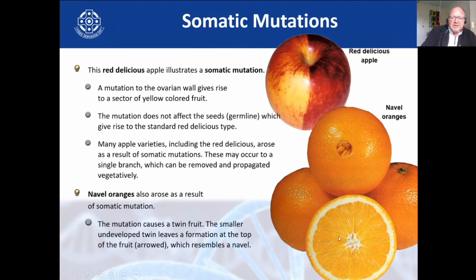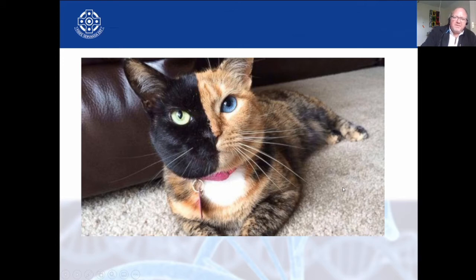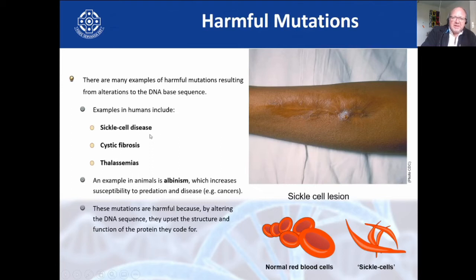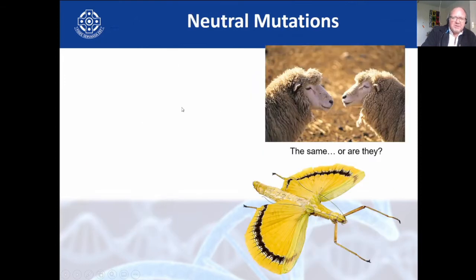Because the navel orange doesn't contain any pips, we know it's a somatic mutation. There is no gamete, no seed, no zygote to go forth and become a new organism. This cat — if you look at the face — again early on during development, one half must have had a mutation. Here are some harmful examples of mutations in humans: sickle cell disease, cystic fibrosis, thalassemia, albinism, and so forth.